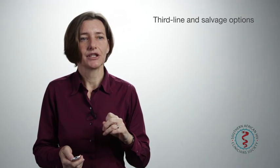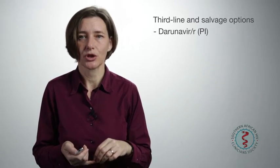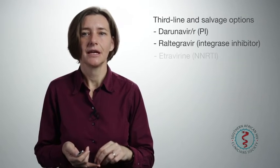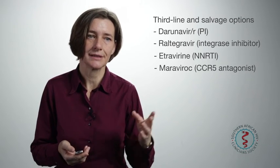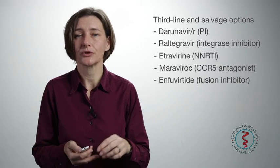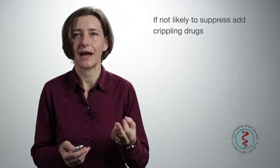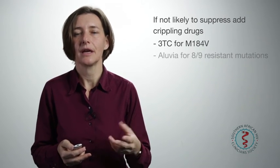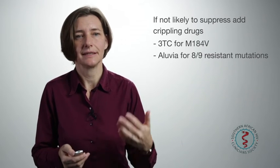In terms of third-line options and salvage therapy, some drugs to bear in mind: Darunavir is a very robust protease inhibitor, now available in South Africa for third-line if we show lopinavir/ritonavir resistance at second-line. Raltegravir is an integrase inhibitor also available now for third-line in South Africa. Etravirine is a second-generation non-nuke available in the private sector. Maraviroc is a CCR5 antagonist used in deeper salvage, and enfuvirtide is an expensive fusion inhibitor available further down the road. If viral suppression is not achievable, you can try to cripple the virus by maintaining mutations that cause it to replicate less well, such as using 3TC to maintain the M184V, or lopinavir/ritonavir when 8-9 resistance mutations to a protease inhibitor are present — that virus is significantly disabled and disease will progress more slowly.